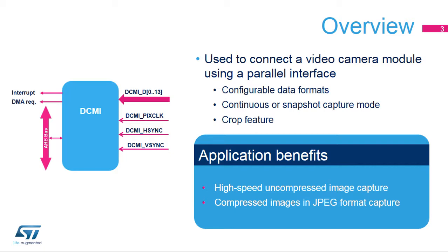The DCMI allows you to perform continuous grabbing. This process starts on application request and continues until the capture bit is cleared. Alternatively, snapshot mode allows you to capture a single frame upon an application request. With the crop feature, the camera interface can cut and store a rectangular portion of the received image.